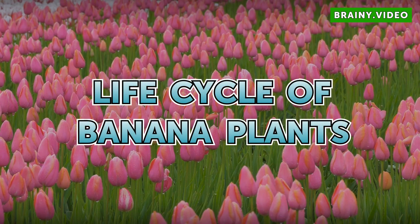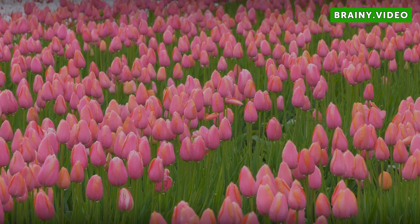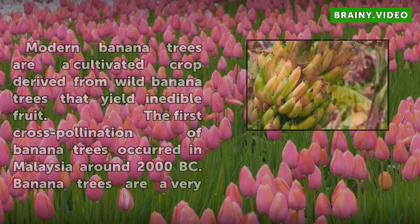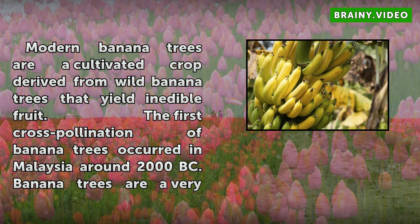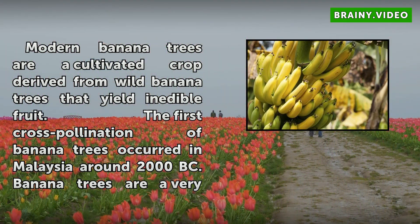Life Cycle of Banana Plants. Modern banana trees are a cultivated crop derived from wild banana trees that yield inedible fruit. The first cross-pollination of banana trees occurred in Malaysia around 2000 BC.